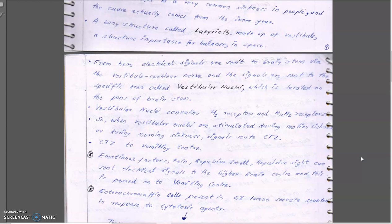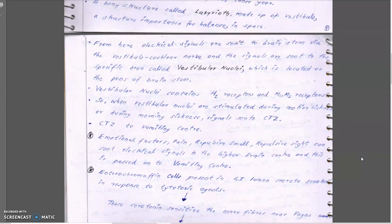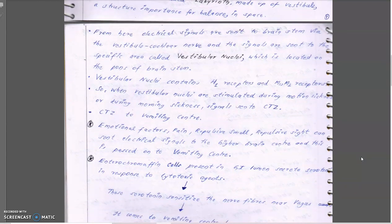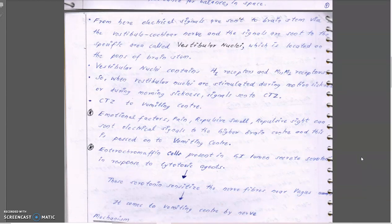The CTZ carries the signals to the vomiting center via its muscarinic area. The vomiting center then starts the vomition activity, giving the message to the muscles to start vomition and to the sphincters related to the gastrointestinal tract.